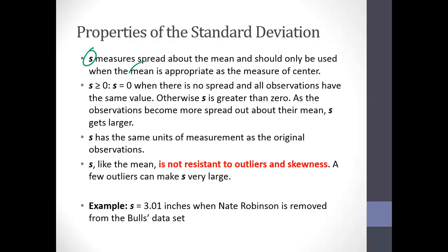The standard deviation and the mean, x-bar, go together — just like the median and the interquartile range go together. The standard deviation will always be positive: we're talking about a measure of spread, and we're adding up squared things, which are all positive. So if you calculate a negative standard deviation, you've made a mistake. As the standard deviation gets bigger, we have more spread; as it gets smaller, we have less spread.